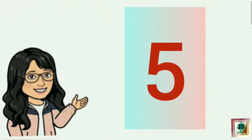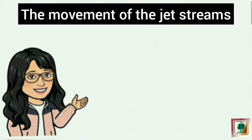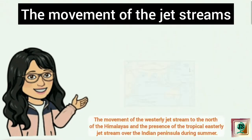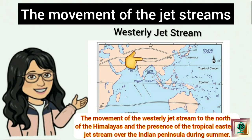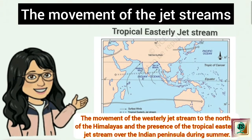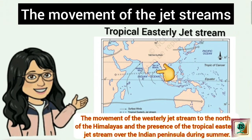The fifth and last factor is the movement of jet streams. The movement of the westerly jet stream to the north of the Himalayas and the presence of the tropical easterly jet stream over the Indian peninsula during summer is also one of the important reasons for the monsoon rain in our country.